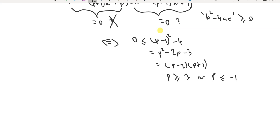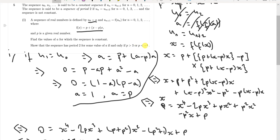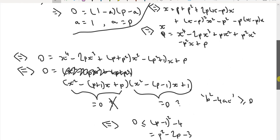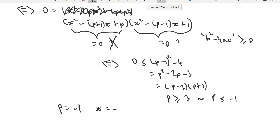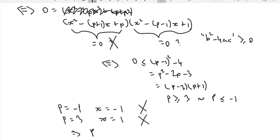For the second factor, the condition is (p minus 1) squared minus 4 greater than or equal to zero. Expanding gives p squared minus 2p minus 3, which factorises as (p minus 3)(p plus 1). This must be greater than or equal to zero, giving p greater than or equal to 3, or p less than or equal to minus 1. But setting p equals 3 gives x equals 1 and p equals minus 1 gives x equals minus 1, which are disallowed — so we need p strictly greater than 3 or strictly less than minus 1.